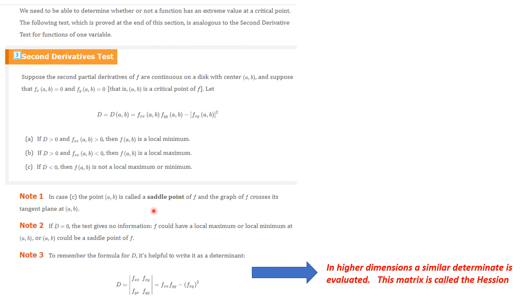So, the test fails if D equals 0 and you could put that there. Okay. So, if it's C, D less than 0, it's a saddle point. If D equals 0, the test fails and you have to look at other information. And to remember the formula for D, which is up here, it's FXX times FYY minus FXY whole squared. That is the determinant of this. This is FXX. This is FYY. This is FYX. And this is FYY. So, it ends up being exactly what we want for D. Now, in higher dimensions, a similar determinant is evaluated and that matrix actually has a name. It is called the Hessian matrix.